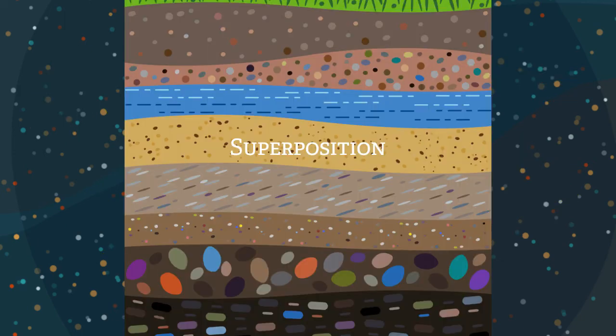Superposition is another way we know about the age of rocks and fossils. This is done by knowing that rocks are older the lower they are, and the rocks at the surface are younger than the rocks below them.